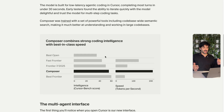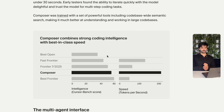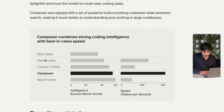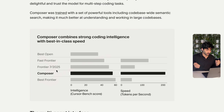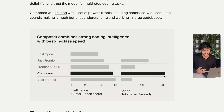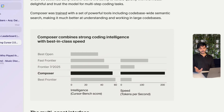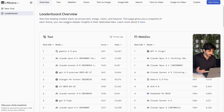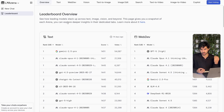In terms of the benchmarking for these models, I hate this chart. I don't know why they put in 'Best Frontier' and 'Fast Frontier' instead of just using the actual names of the LLMs or coding models they're comparing it to. I assume Best Frontier is Claude Sonnet and Fast Frontier is Grok. But what this is saying is that in terms of intelligence it is relatively close to the Best Frontier model, and it is very fast compared to all other models. I don't really like to look too much into benchmarks — the best way to understand is to actually use the models.